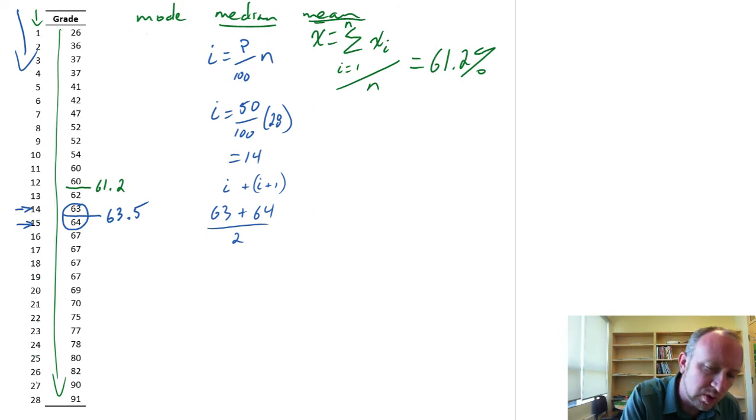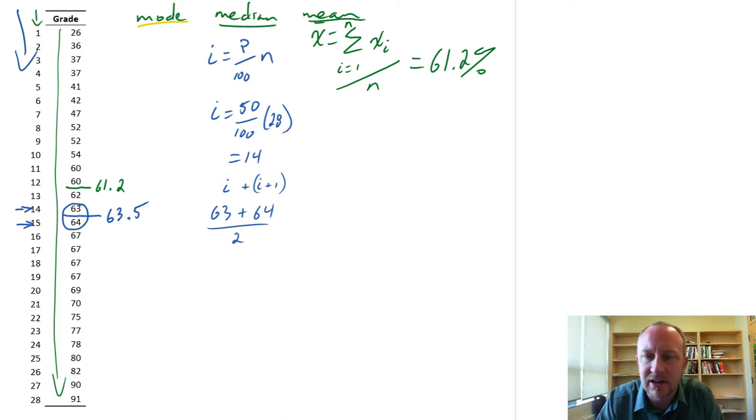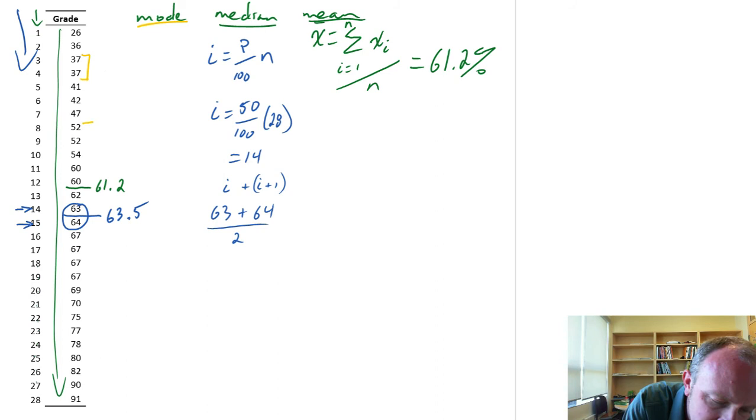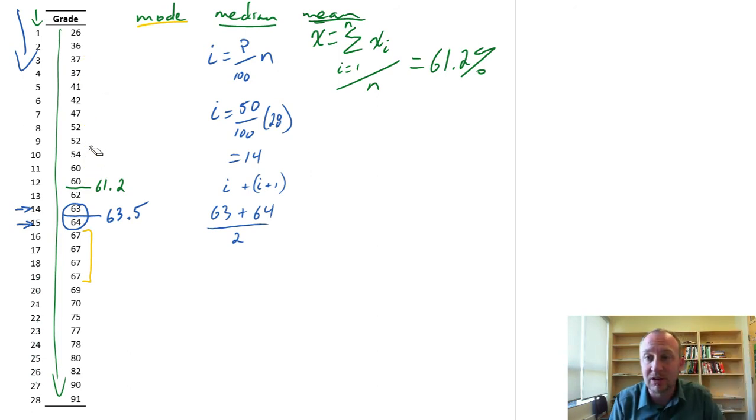Moving on to our mode. So the mode, this is that observation that occurs with the highest frequency. Having all of our data sorted from smallest to largest groups all of those identical observations together. So I can go through and I can say, okay, we have two 37s, two 52s, I have two 60s. Oh, I have four 67s. So these don't matter anymore, these pairs, because now I've got one observation that occurred four times, and nothing else. So here, 67, this is my mode. Okay, so we've identified our mode as 67, our median 63.5, our mean 61.2.